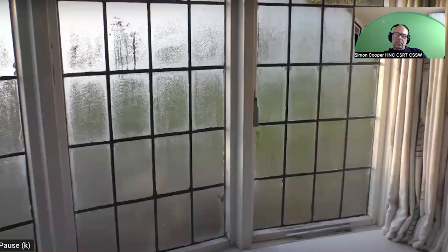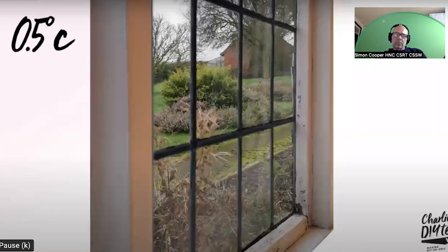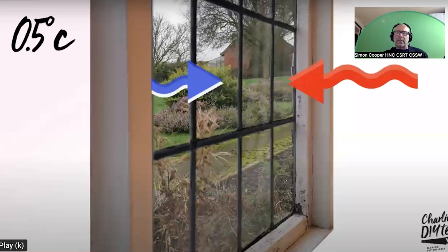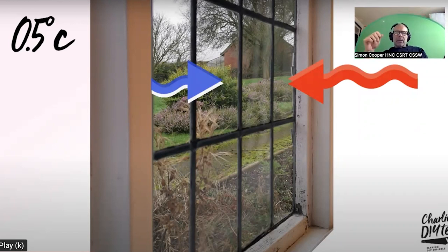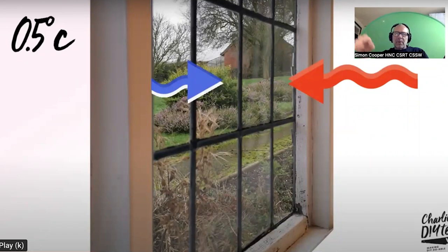Understanding relative humidity is really important if you want to get to the bottom of why you're getting condensation on your windows. Condensation forms when airborne water vapor comes in contact with a surface colder than the dew point - typically single-glazed windows. The easiest way to understand it: if you've got a mirror in a bathroom when you have a shower, condensation forms on it because it's non-porous and normally a colder surface.